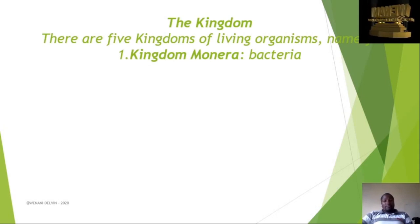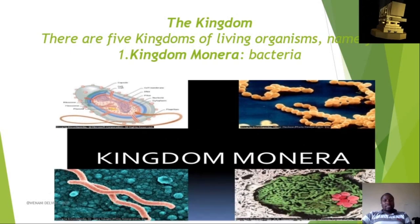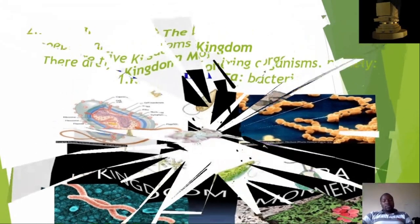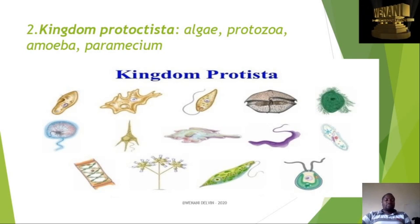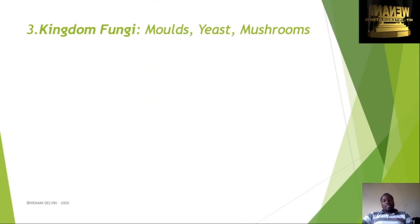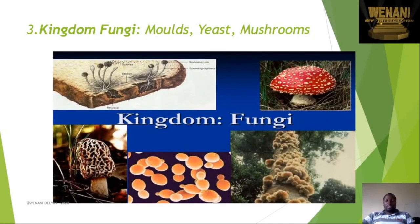There are five kingdoms. The first is Kingdom Monera — these are basically the bacteria. The second is Kingdom Protista — these include algae, protozoa, amoeba, and paramecia. The third is Kingdom Fungi — this consists of molds, yeasts, and mushrooms.